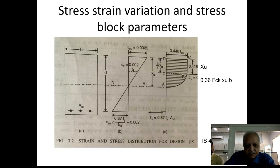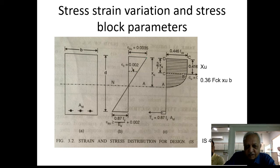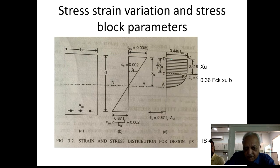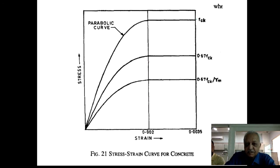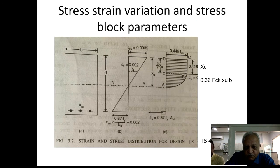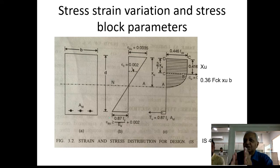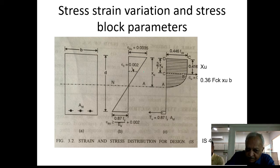Considering the stress variation across the cross section: at the extreme fiber we have a strain of 0.0035; at some point below that the strain is 0.002. Between these two points, the strain changes but stress does not change — consistent with the stress-strain curve. The stress remains the same between strains 0.002 to 0.0035, giving a straight (constant) portion in the stress diagram, then reducing to zero at the neutral axis. The strain diagram is linear because plane sections remain plane, but the stress does not vary linearly.